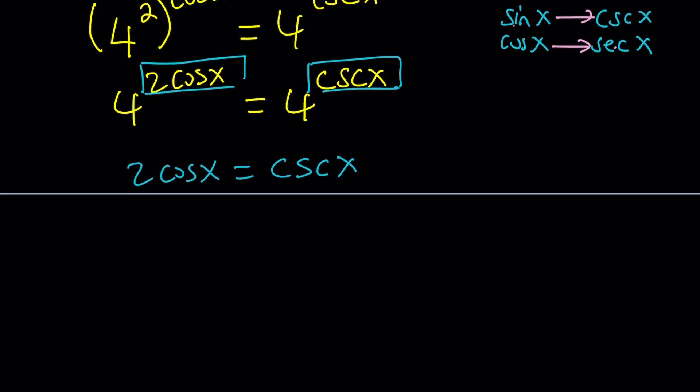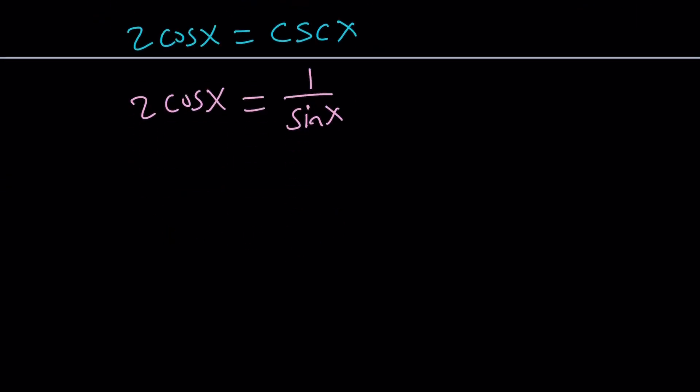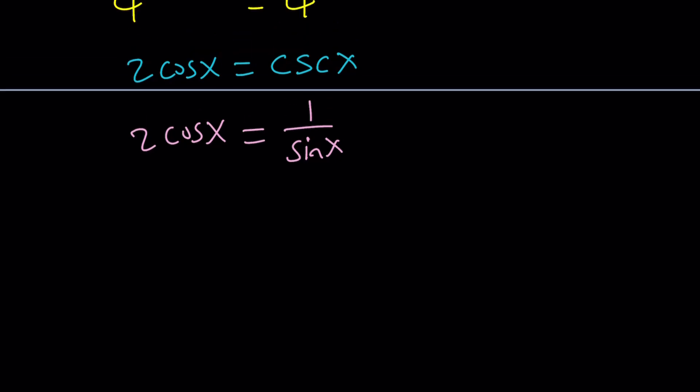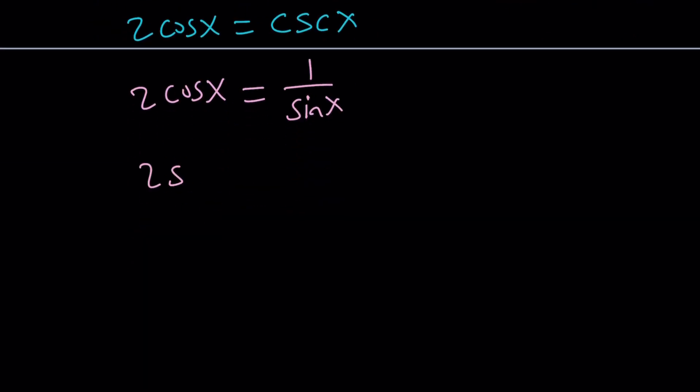So we can write cosecant as 1 over sine and then cross multiply. Notice that sine x should not be 0. If sine is 0, cosecant will be undefined. Multiply both sides by sine x or cross multiply. You get 2 sine x cosine x equals 1. Does that look familiar? This is something you'll see very often if you're doing trigonometry.